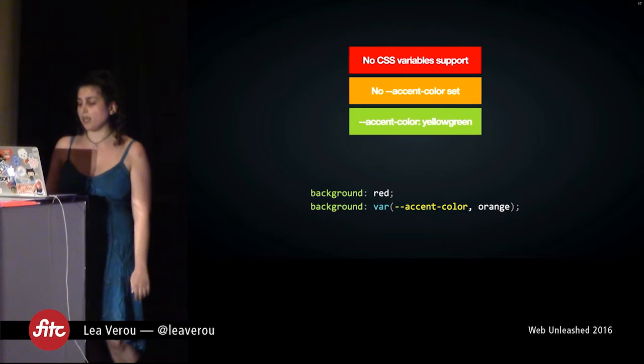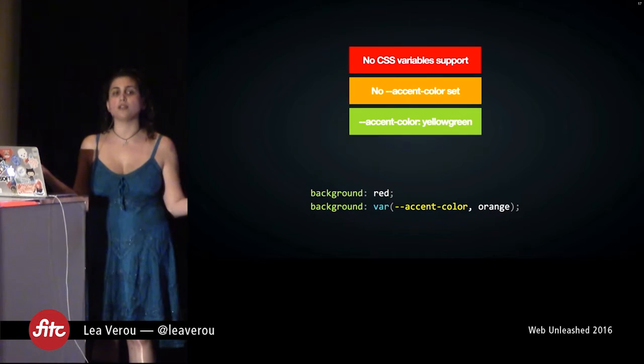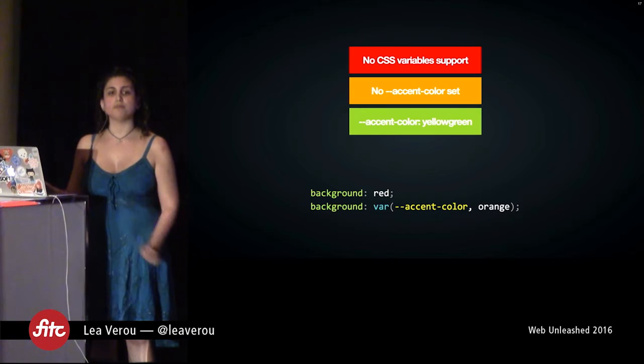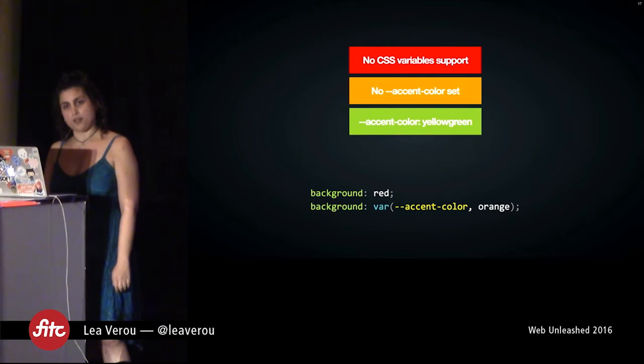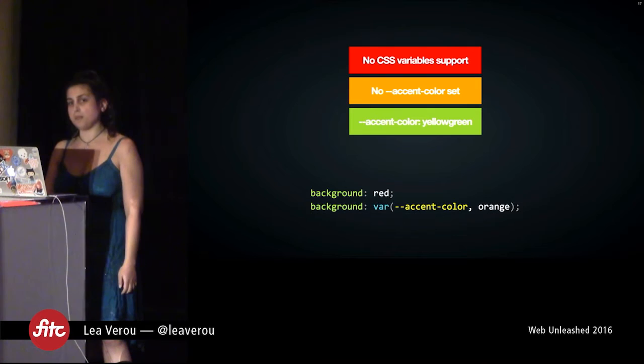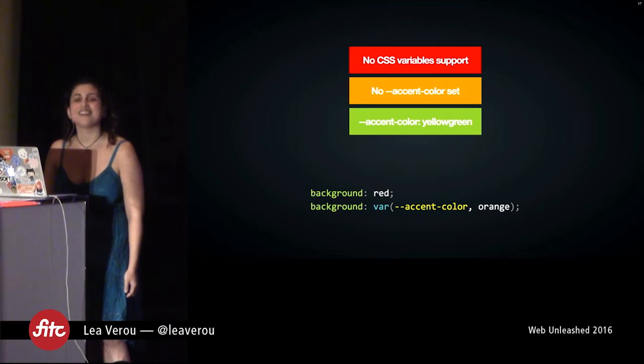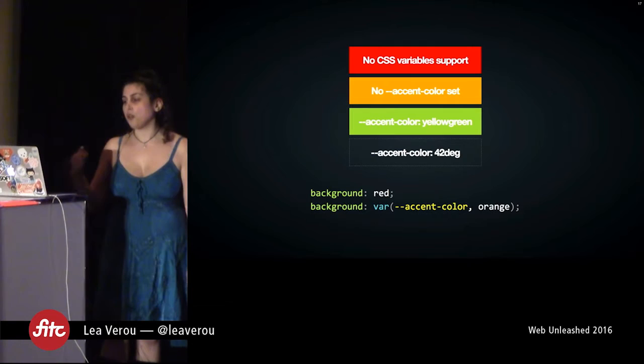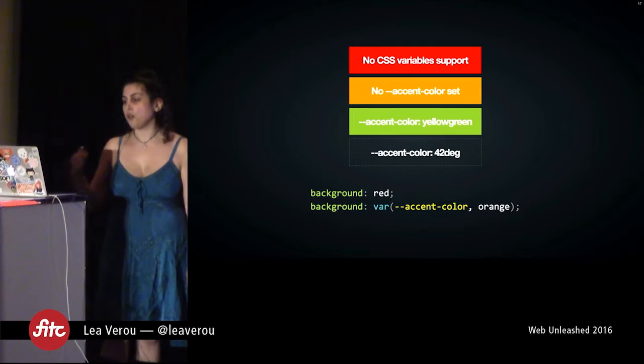If the browser supports CSS variables but you haven't set a value for accent-color — or it's explicitly set to 'initial' — you'll get orange, the fallback from the var function. And if accent-color explicitly has a value, either inherited or set, you'll get that color. But what if accent-color has a value that's nonsensical for background, like '42 degrees'? The fallback doesn't apply if the value exists but doesn't make sense in the current context. The answer is transparent.